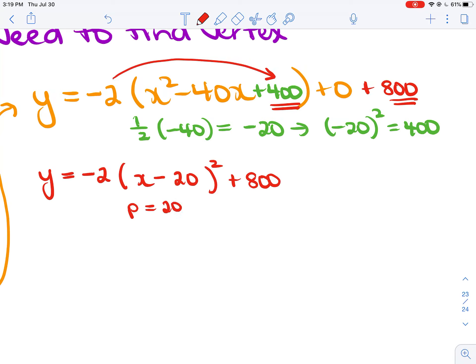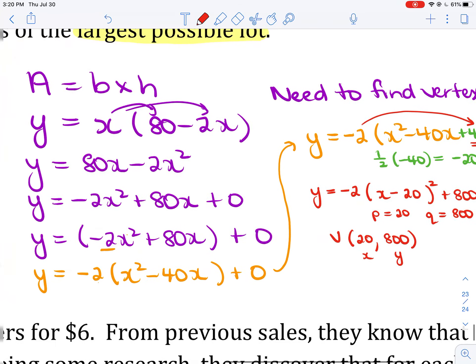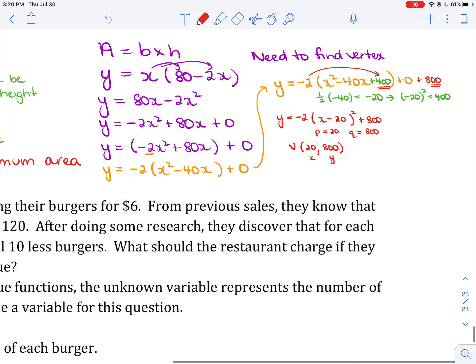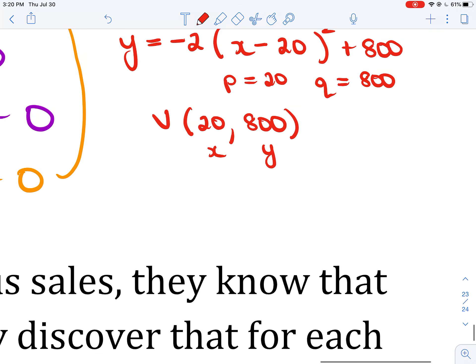You can identify P. P is 20. Q is 800. Because your vertex is located at P, Q. So, 20 comma 800. X and Y. Go back to where you defined your variables. X is the height. 80 minus 2x is the base. So, X is the height. So, X equals 20 is your height.